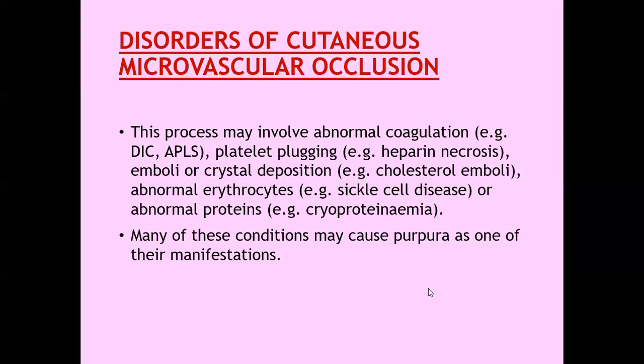Disorders of cutaneous microvascular occlusion. This process may involve abnormal coagulation, for example DIC or antiphospholipid syndrome, or disorders of platelet plugging, for example heparin necrosis, emboli or crystal deposits like cholesterol emboli, abnormal erythrocytes resulting in microvascular occlusion like in sickle cell disease, or abnormal proteins like we see in cryoproteinemias. Many of these conditions may cause purpura as one of their manifestations.